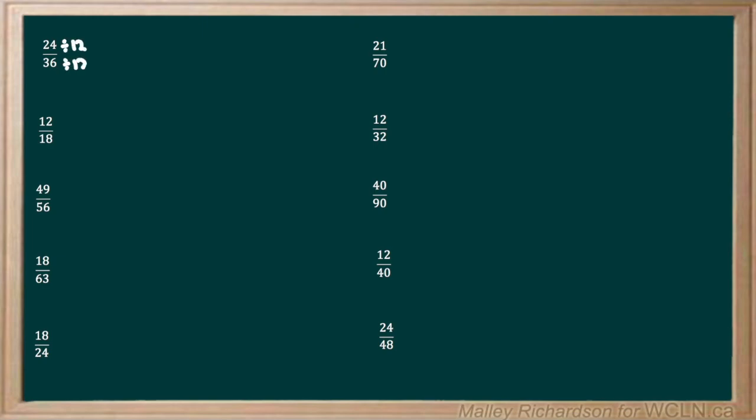We have 24 over 36. To put this into its lowest form we need to find the highest multiple that will go into both 24 and 36. Using our common multiples, we know that 12 can go into 24 and 36. So let's divide our top and bottom by 12. 24 divided by 12 is 2 and 36 divided by 12 is 3. 2 thirds cannot be reduced down any further, so that is our final answer.